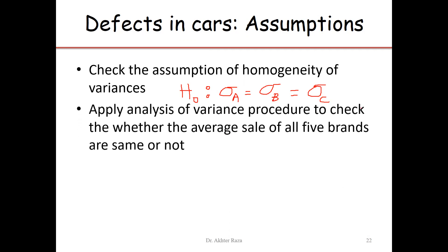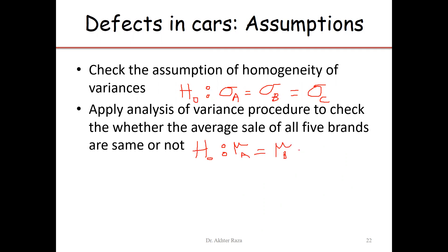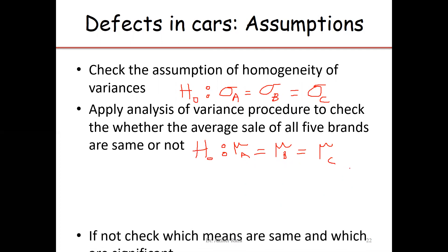The second step is to apply the analysis of variance procedure to check whether the average defects for all three brands of car are the same or not. Our primary objective is to check the mean defects in cars, but we must first check whether the variances are the same, because we cannot apply ANOVA if the variances are not equal. If variances are not equal, we can use a transformation procedure, and after transforming the data, if the variances are stabilized, we can apply ANOVA to the transformed data instead of the actual data.